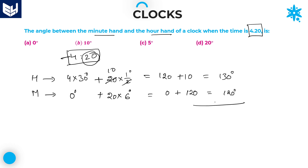Now take the difference between the hours hand and minutes hand: 130 minus 120, the difference between those two is 10 degrees. Option B is the right answer for this question — 10 degrees.